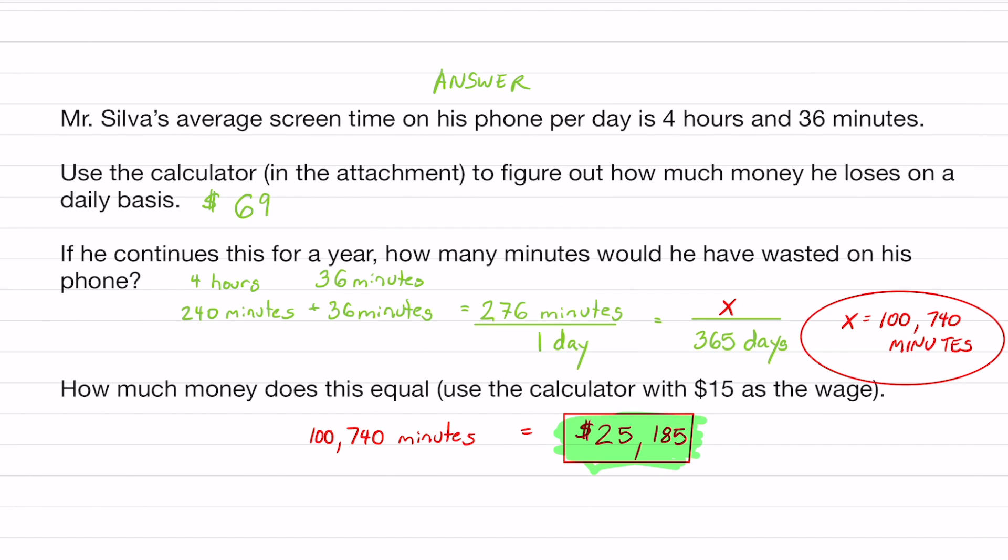The second question is, if I continue this pattern, how many minutes would I have wasted on my phone? I mean, it's not a full waste, you know, because I make these videos. But no excuses. Sometimes I do waste a lot of time on my phone. 4 hours and 36 minutes. First, you had to convert this into minutes. And all you have to do is times that by 60. And then add these two up and you'll get the minute amount per day. The projected minutes that I'm going to spend on my phone, all I have to do is set up a proportion like this. Cross multiply and solve for x. And I will get 100,740 minutes.